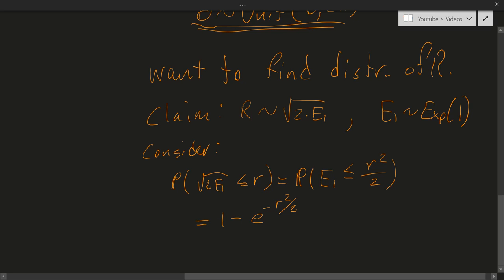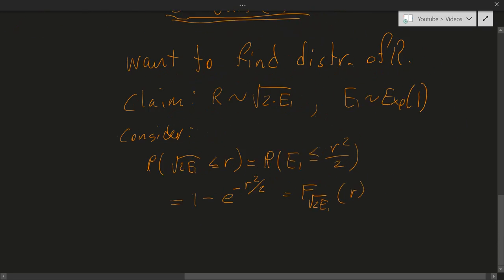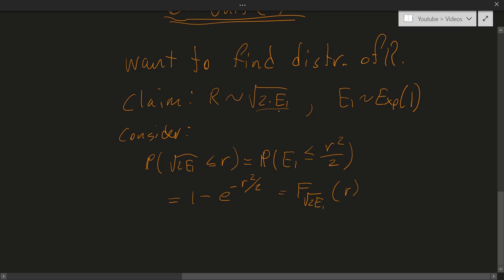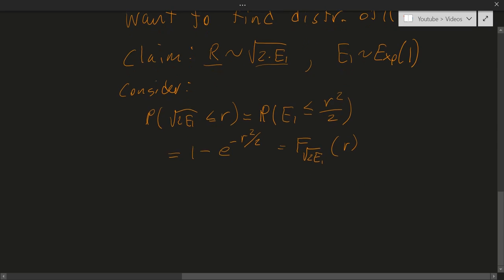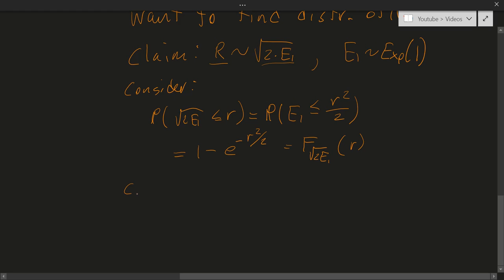Now, I notice, so this is the CDF of square root 2 e1 taken in r. Now, to find the density, I wish to show that the density of this random variable is equal to the density of this one. So to find the density, I consider the derivative of the CDF.